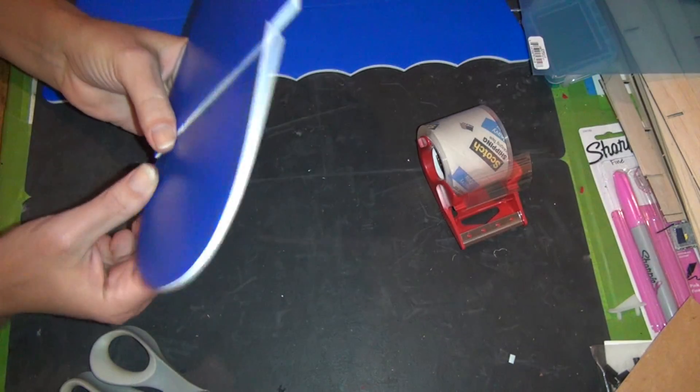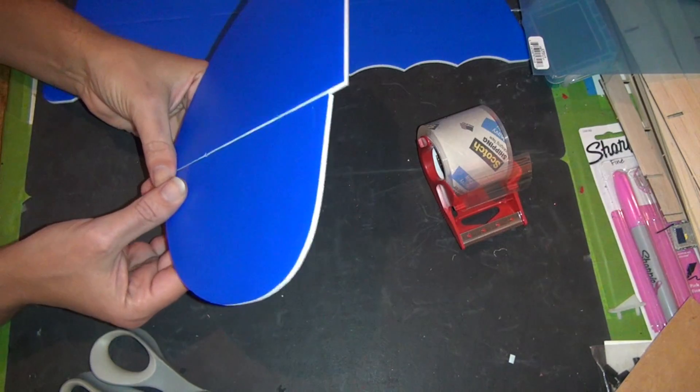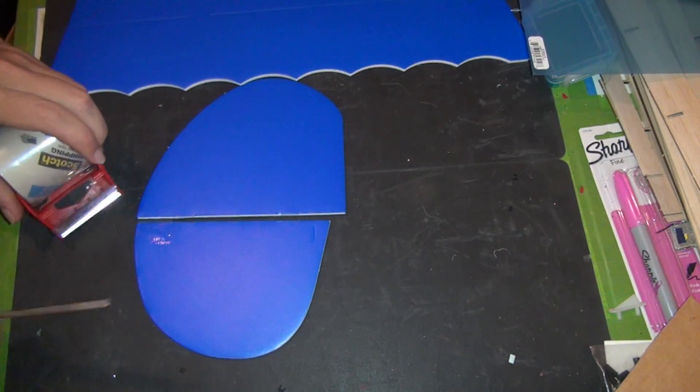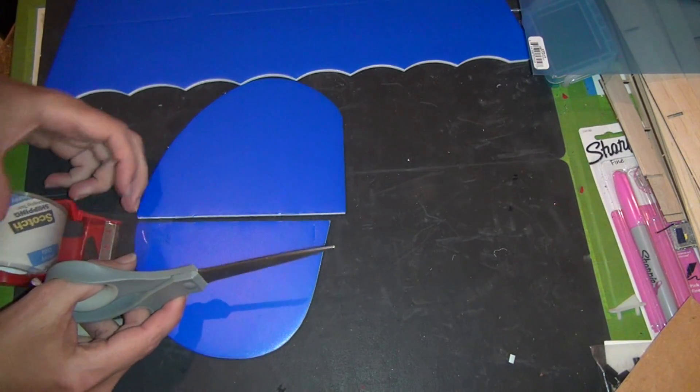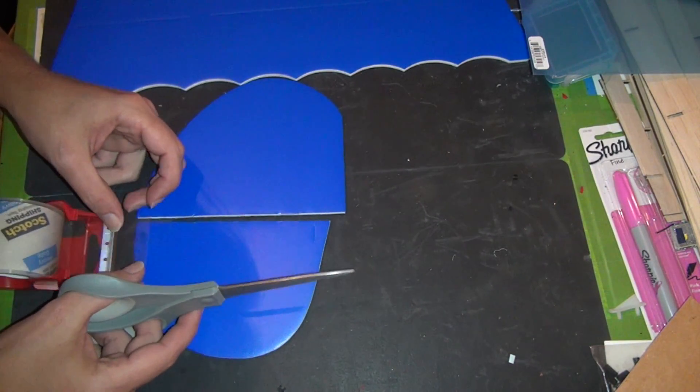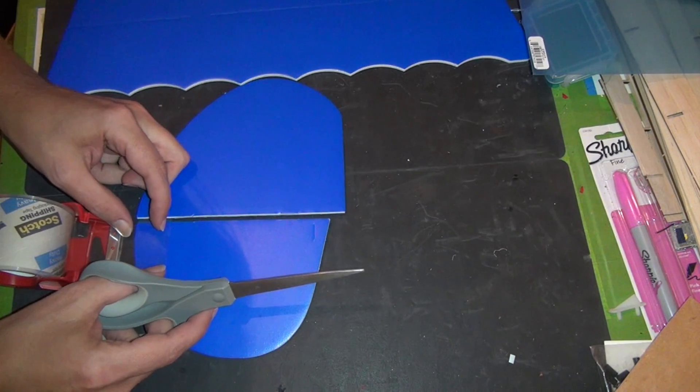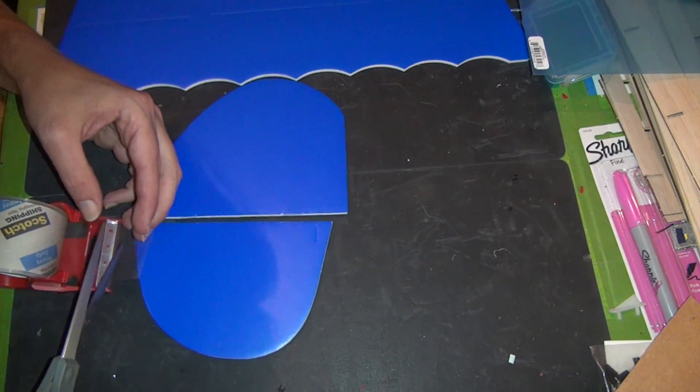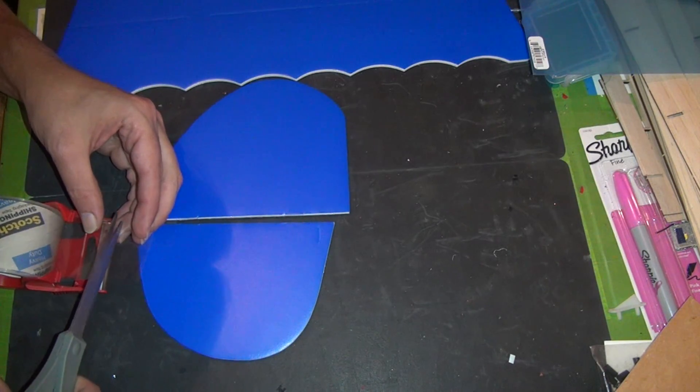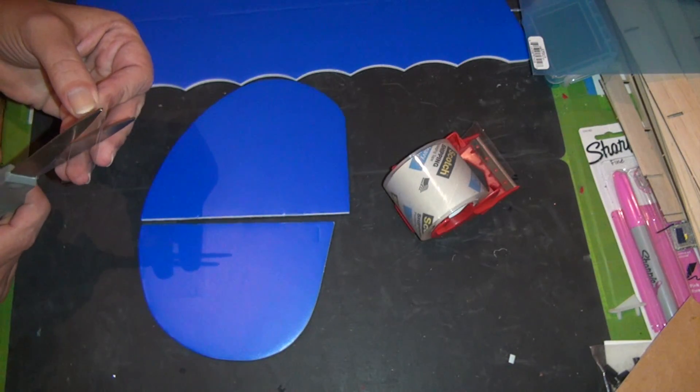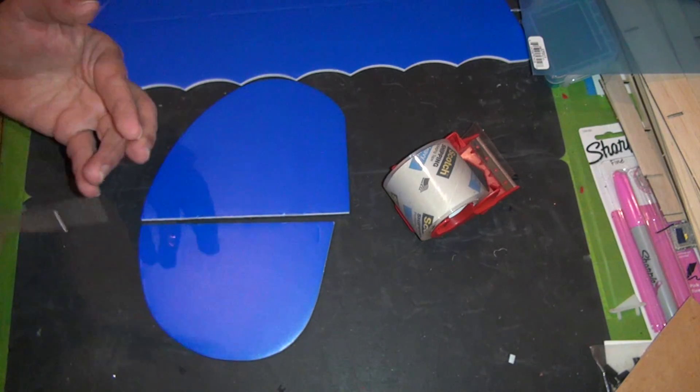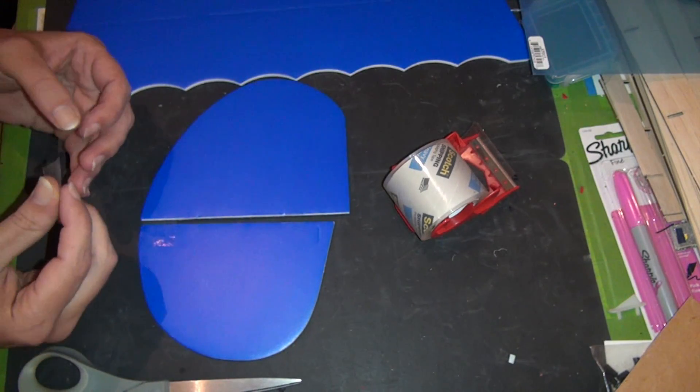You can see the tape is in between there like that. Now the next thing we do is just do the same thing again but in the other direction. So get another piece of tape approximately the same width as that one. It doesn't have to be exact, you can just eyeball it. Cut it in half, stick it together.